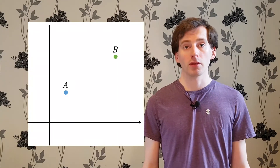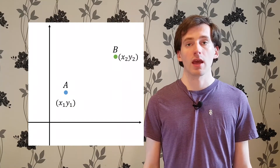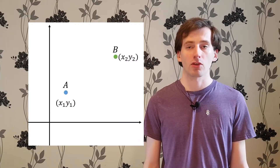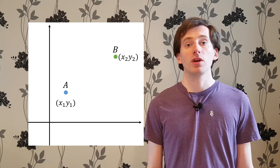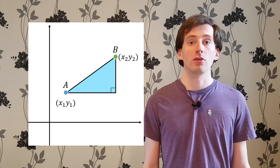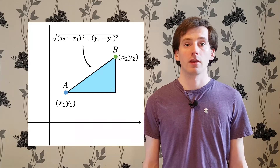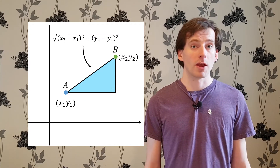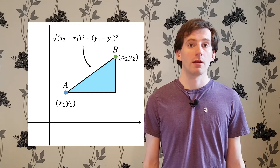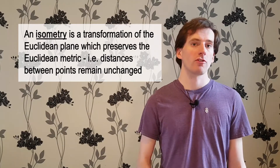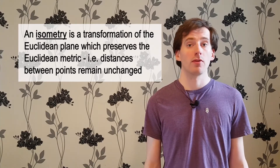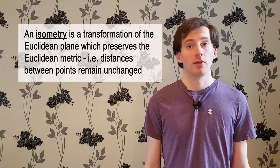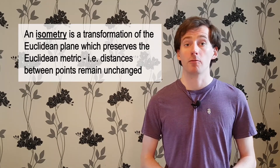I'll just quickly remind you how we calculate the distance between points with the Euclidean metric. Suppose two points, A and B, have Cartesian coordinates (x₁, y₁) and (x₂, y₂) respectively. Then we can form a right triangle and use Pythagoras' theorem to find the distance. We can use this metric to make precise what we mean by transformation. An isometry is a special transformation of the Euclidean plane which preserves the Euclidean metric. The name is, perhaps unsurprisingly, derived from Greek.